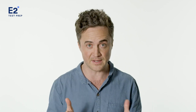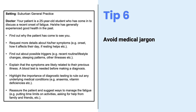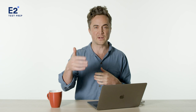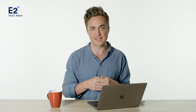Tip number six is to avoid medical jargon. If we look closely at this particular roleplay card, we can't really see much jargon. There is the word 'anemia,' which this 25-year-old might need to understand a bit better, or possibly even 'vitamin deficiencies.' You can't really make any assumptions about what he or she will know. So make sure that if you do see a word or phrase that is jargonistic, you de-jargonize it for that particular person.